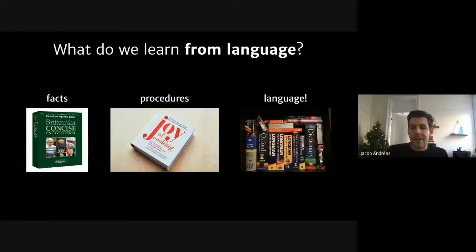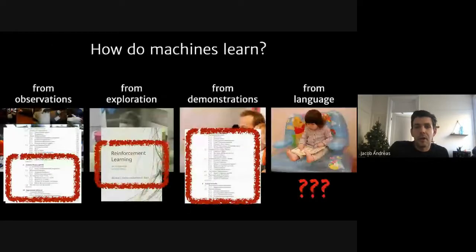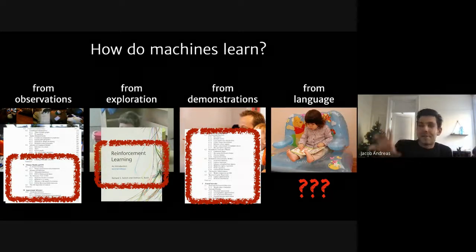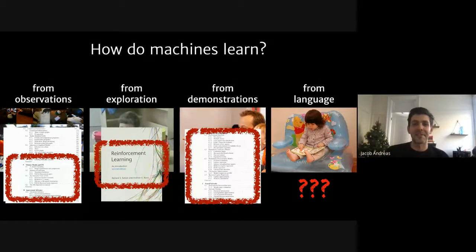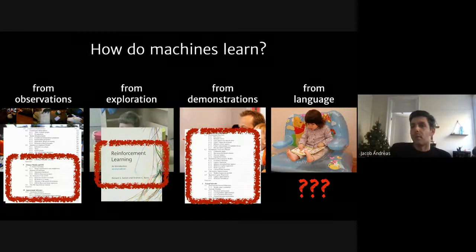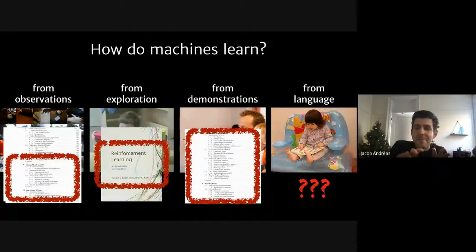Language is the tool we use for acquiring more complicated skills. The ability to learn from language is one of the fundamental things that separates humans from all other learning systems that nature has produced — and also from all learning systems that humans have produced, since learning from language lacks its own dedicated ML textbooks or conferences.